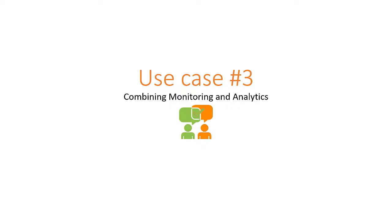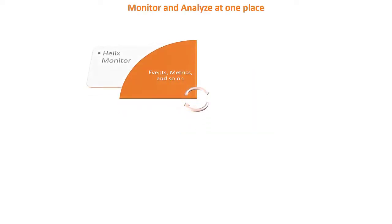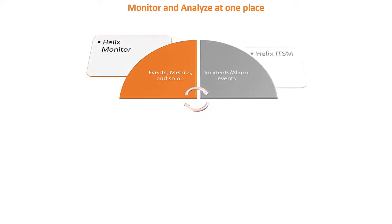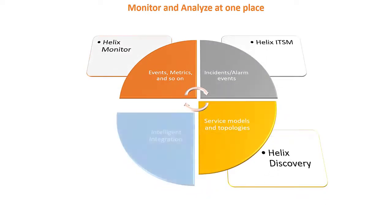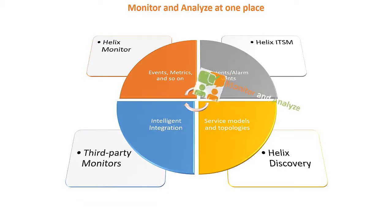Number 3: The primary functions of AIOps are combining monitoring and analysis. With BMC Helix AIOps, you get a single framework to monitor and analyze data from across all the underlying domains and services, reducing the need for multiple analytic tools.